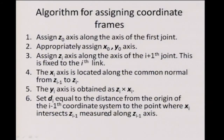We will go along with this form, and later I will explain why it is convenient to use. We start by assigning the z_0 axis along the axis of the first joint. Then you can appropriately assign x_0 and y_0 — they are free, so you can rotate them around. After this, the DH parameter method kicks in and everything else is automatic until we get to the last link.